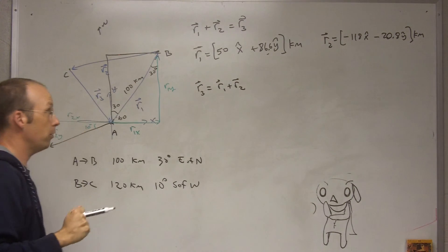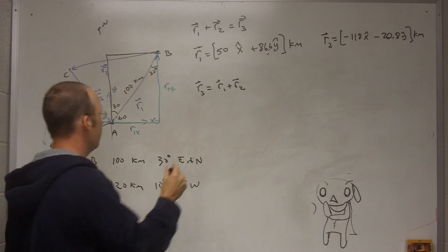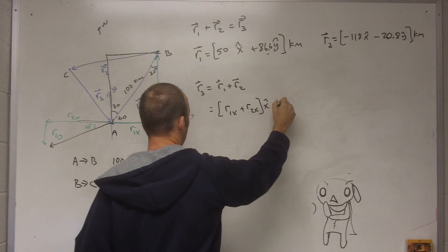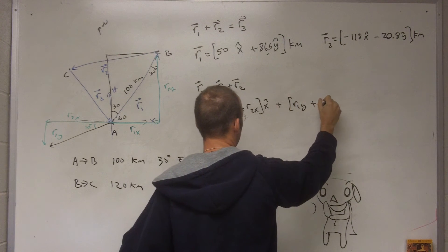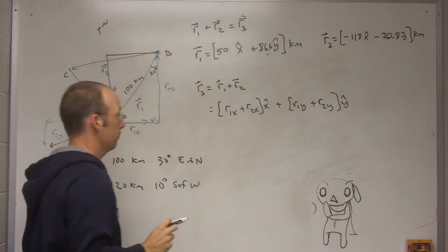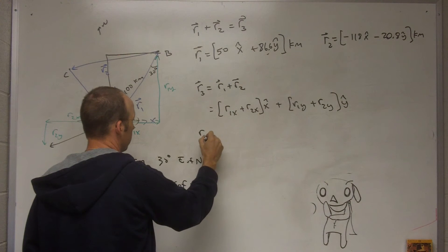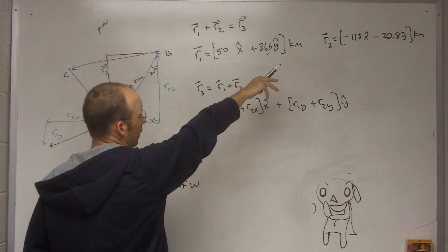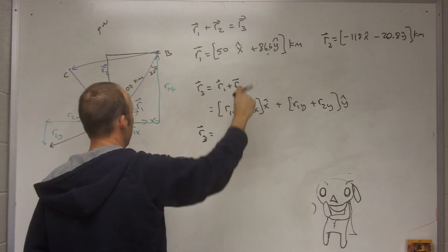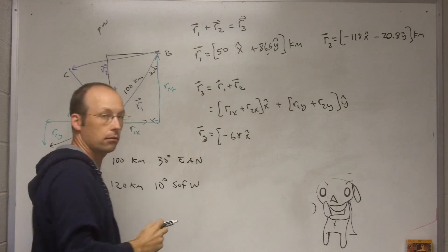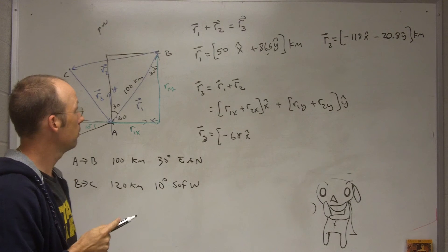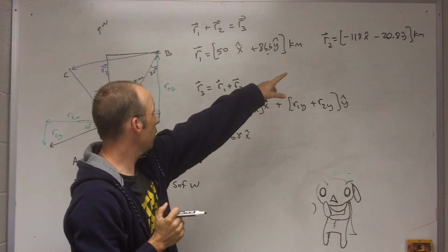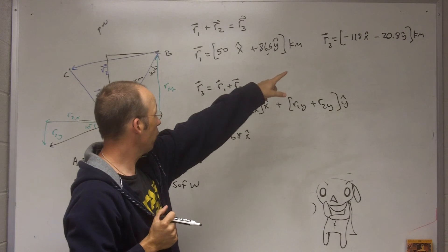Okay, so now I want to find r3. r1 plus r2. And the beauty is, once you get them computed into components, then this is just going to be equal to r1x plus r2x x-hat plus r1y plus r2y y-hat. So I can just add the components. r3x is going to be equal to, that's 50 plus negative 118, so that's negative 68. And then the y component is going to be 86.6 plus negative 20.8, so it's going to be 65.8.